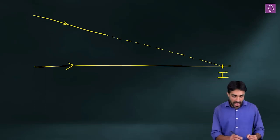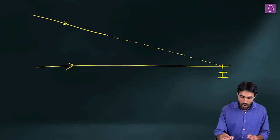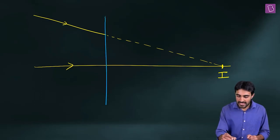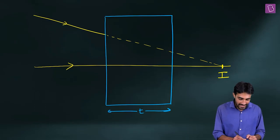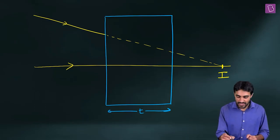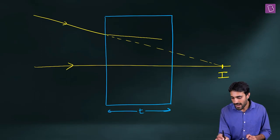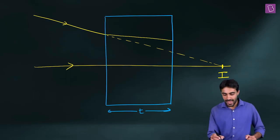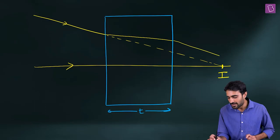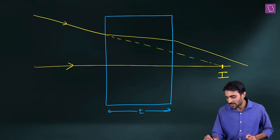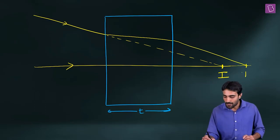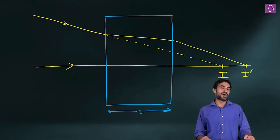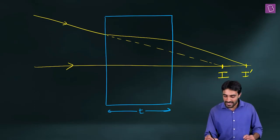Now, what if I place a glass slab of thickness T? The ray of light will bend towards the normal at the first surface and then bend away from the normal at the second surface. So we can see the image is formed at some other point — this is I'. This is how the image is shifting.